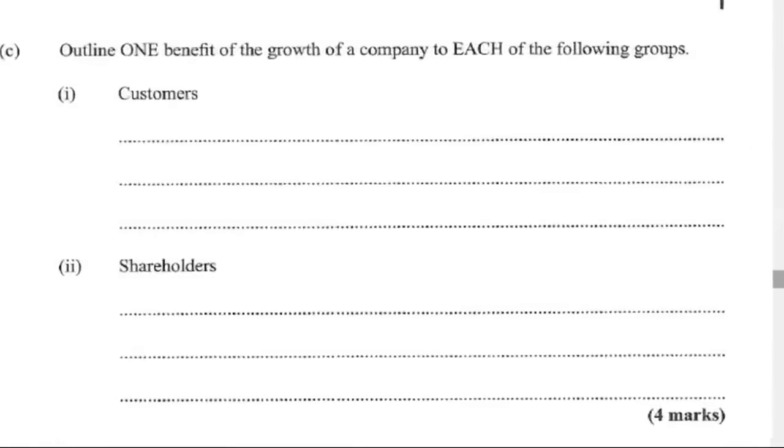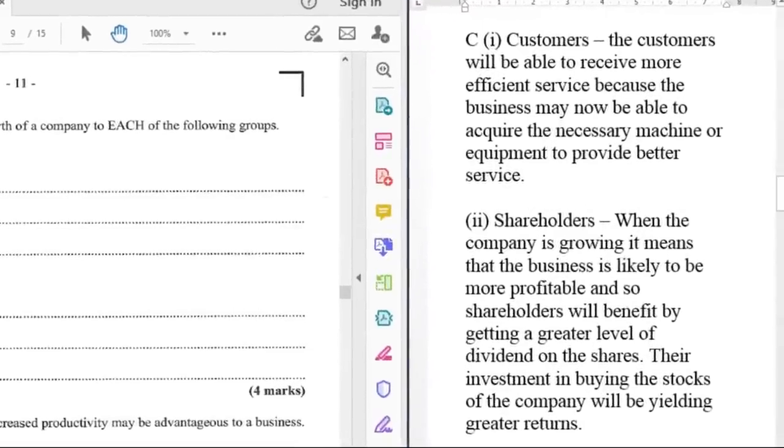C says outline one benefit of the growth of a company to each of the following groups: customers and shareholders. For customers, they will be able to receive more efficient service because the business may be able to acquire the necessary machine or equipment to provide better service. For shareholders, when the company is growing, it means that the business is likely to be more profitable and so shareholders will benefit by getting a greater level of dividend on the shares. Their investment in buying the stocks of the company will be yielding greater returns.